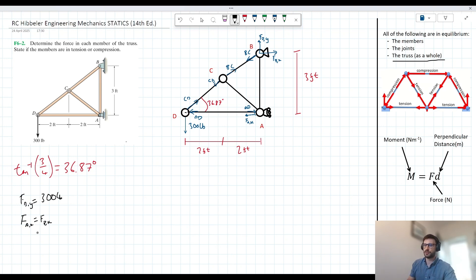So to solve for FA,X and FB,X here, we can take moments. We can say, we can write it out like this. We can say the sum of the moments at D, let's say, acting clockwise, are equal to zero.